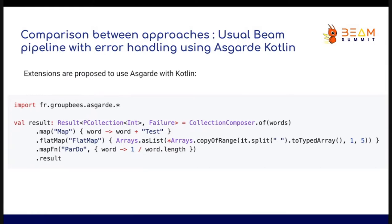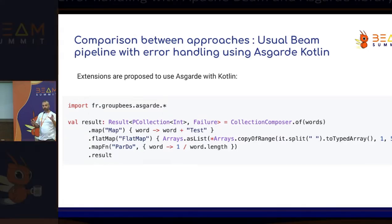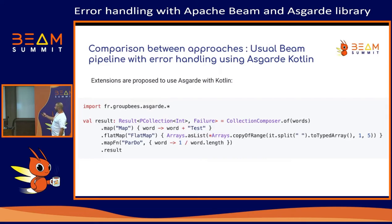Asgard also proposes Kotlin extensions. Kotlin extensions are a very powerful system that allows adding methods to an existing structure. It is syntactic sugar that allows proposing operators like map, flatMap, and some custom operators. The code is more expressive and more consistent. To use Kotlin extensions for Asgard, you only have to add one import line: import groupies-asgard-stars.